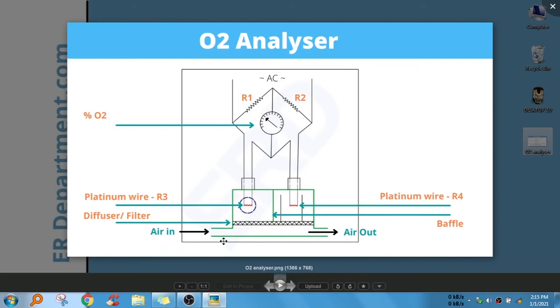Air is taken in and there is a diffuser or filter through which air goes into this platinum wire. Here the main thing you should remember is there is a magnetic field artificially created here.